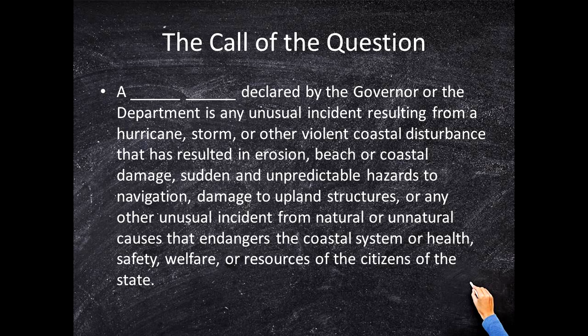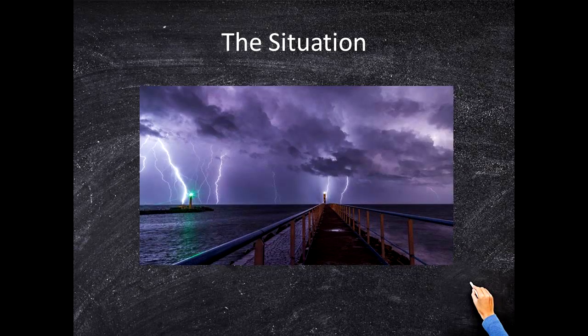That's a long one. But what we take away from this is that something is going on — some kind of big coastal storm. When you think of coastal events, you should think of 62B33, but let's not get ahead of ourselves. We know it's something to do with the coast, and we know it has something to do with the department — the Department of Environmental Protection. So let's look at our answer choices and see if we can narrow it down.